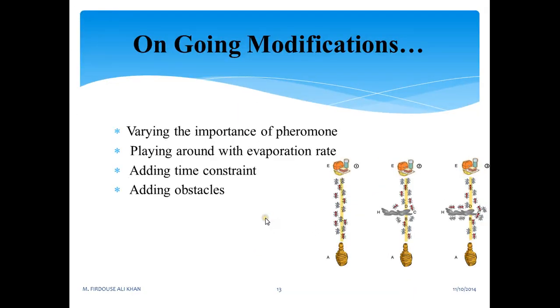Ongoing modifications or ongoing research on ACO: people are varying the importance of pheromone and finding out what changes are happening. They are playing around with evaporation rate, adding time constraints, and also adding obstacles. You can see here an example: adding constant obstacles between nest and food. What happens? This is a normal path. When an obstacle is added, no doubt a distraction will be there on the path, but after some time it gets settled.